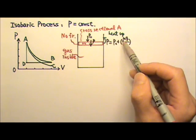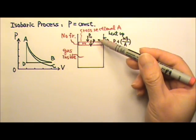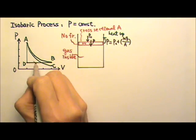We were heating up the gas, and the volume increases, so it would be D to B.